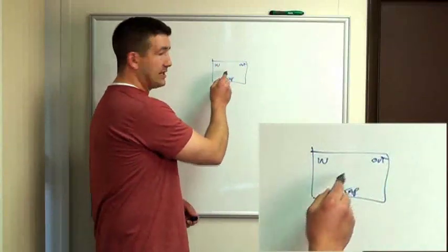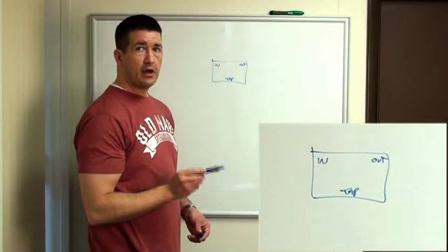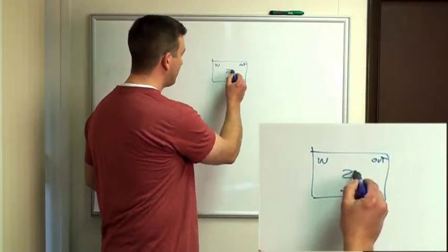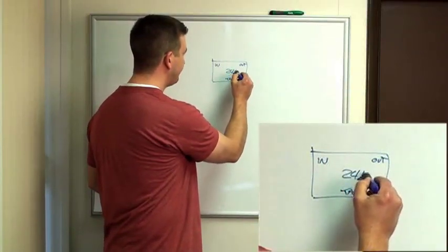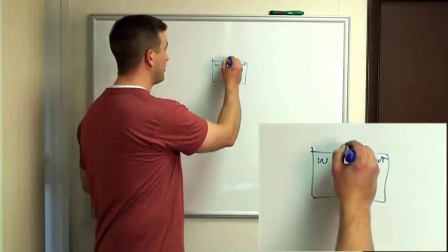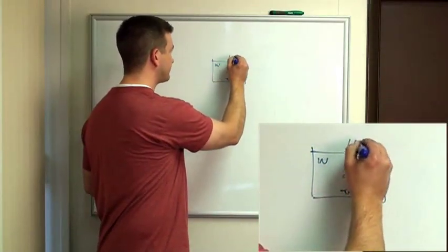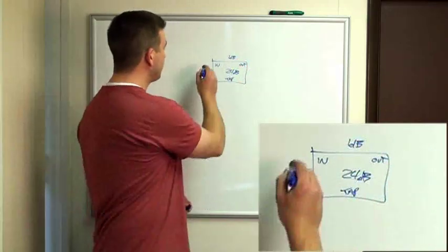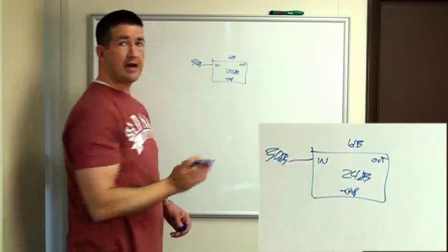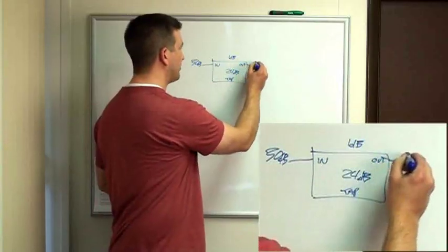Between the in and the out, depending on the value of the tap, there's an insertion loss. If we had a 24 dB tap, the insertion loss between the input and the output is only going to be 1 dB. Now, that means if we had 30 dB coming into our input of this tap, the output is going to be 29 dB.